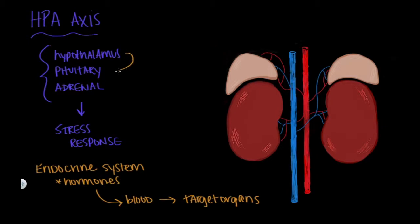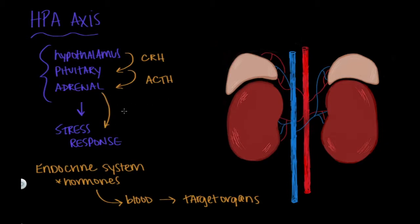In that scenario, the hypothalamus will make and release CRH, or the corticotropin-releasing hormone, which causes the pituitary gland to make and release ACTH, or the adrenocorticotropic hormone. That will then travel through the bloodstream to stimulate the adrenal glands to make and release stress hormones, the main one being cortisol.